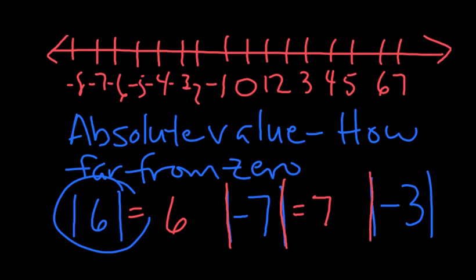Here's another one. Negative 3, absolute value. How far from 0? 3. So absolute value is just how far from 0. If it asks you the absolute value of 100, you would say, oh, that's 100 places from 0, so 100.